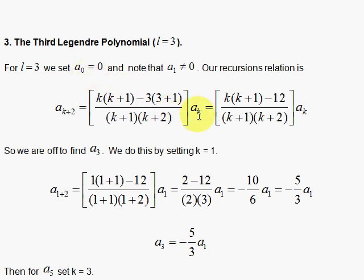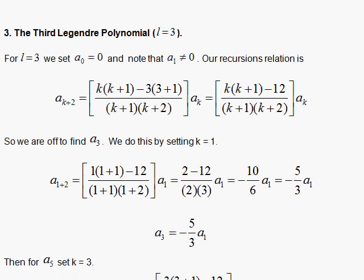So a sub 0 here is 0, so that means a sub 2 will be 0, and then a sub 4 will be 0, and a sub 5 will be 0. So that's already taken care of, and let's see what happens with the odd powers here.